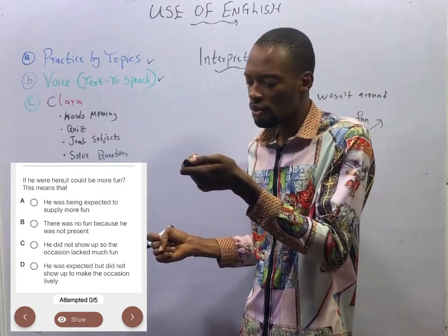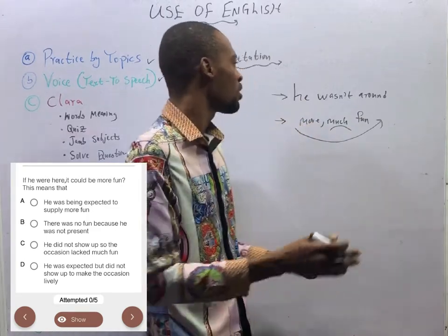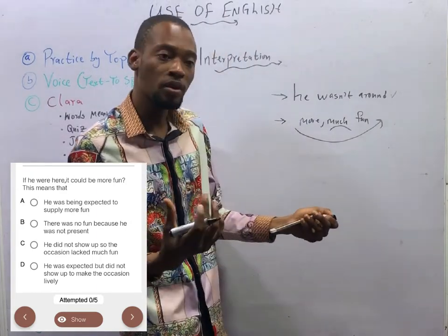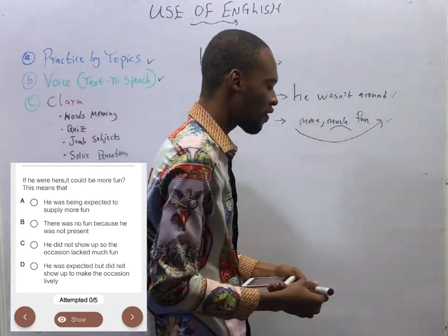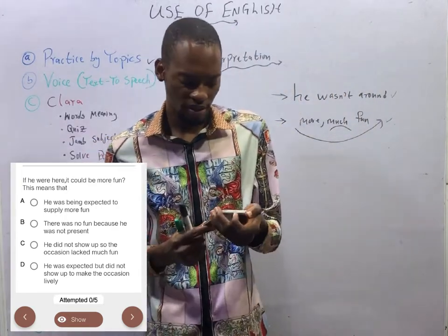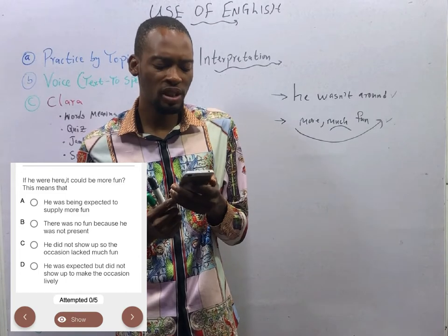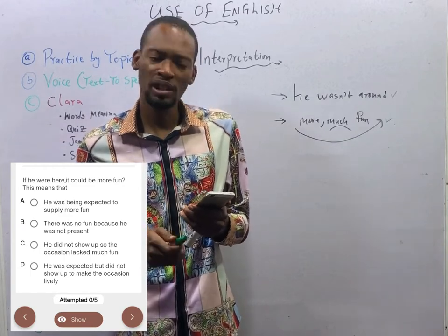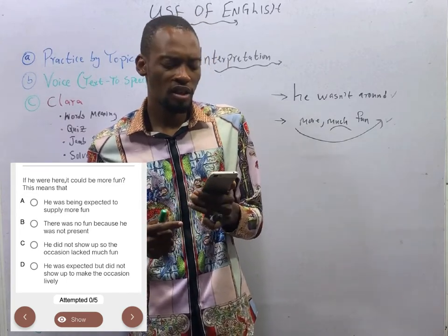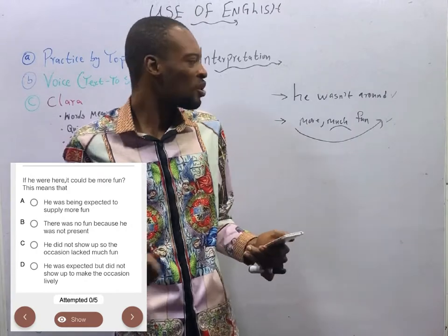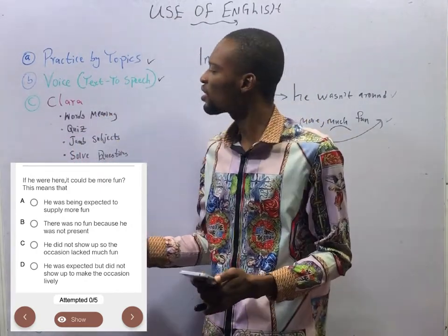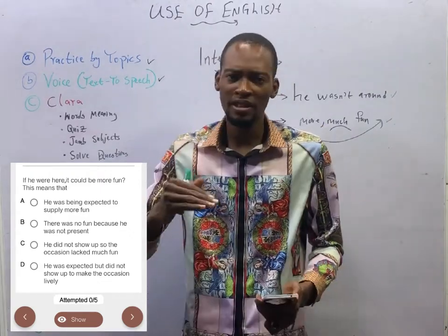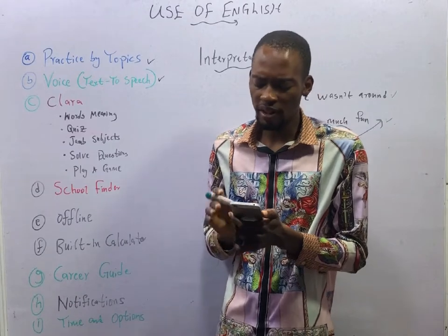Option C: he did not show up, so the occasion lacked much fun — he was not around, that part is attended to. But 'the occasion lacked much fun' means it wasn't so much fun, which makes this a partial answer. Option D: he was expected but did not show up to make the occasion lively — the occasion was lively, nowhere in the sentence says it wasn't. Wrong interpretation and half interpretation are very, very wrong.